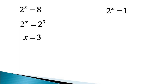Turning to the second value, 2 raised to the power x equals 1, which can be expressed as 2 raised to the power 0. Again, since the bases are equal, the indices must be equal, making x equal to 0.